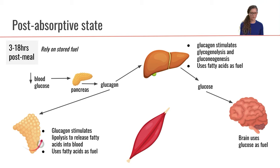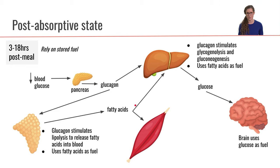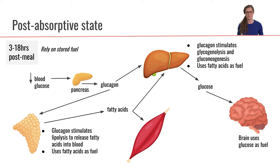The adipose tissue will also be using fatty acids as fuel in this situation — those are the fatty acids that have been released into the bloodstream from the adipose tissue. And those fatty acids will be used as fuel by the liver and by the muscle.